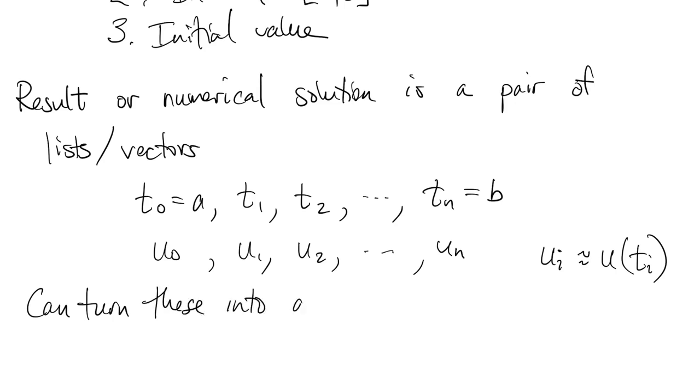We could use these outputs, as we did in the last chapter, to produce an interpolant if we want a function as the solution. Most software offers that option automatically. Sometimes it's called dense output.